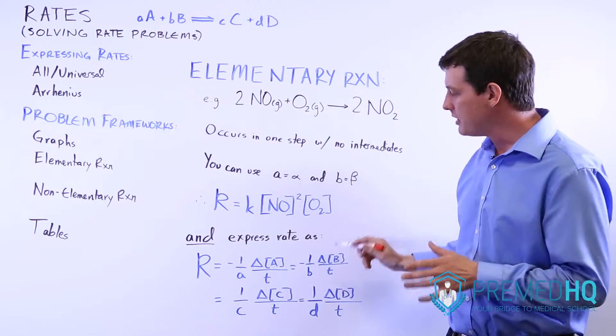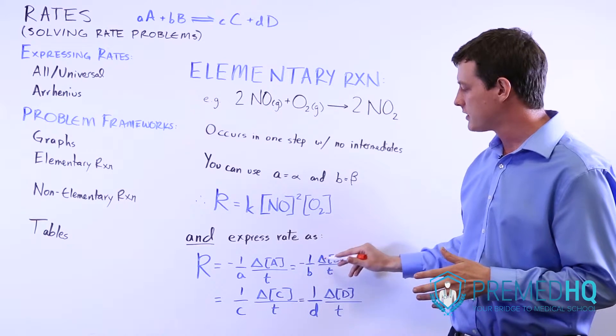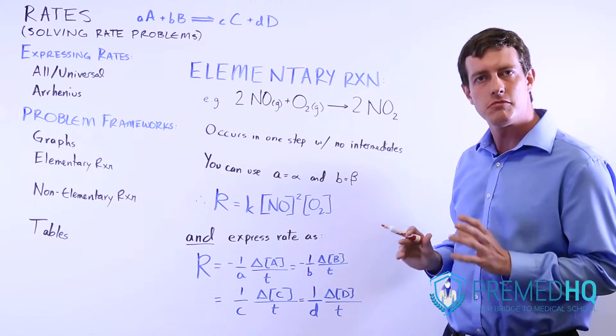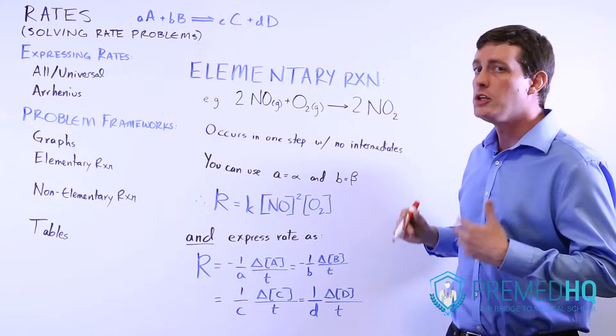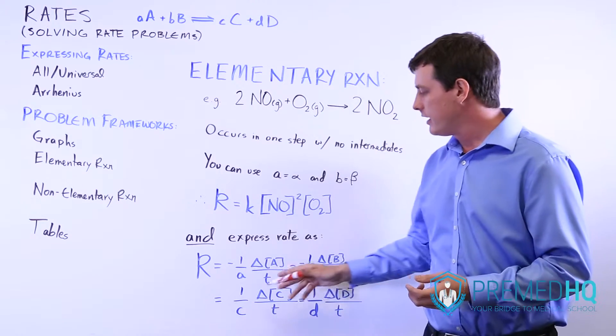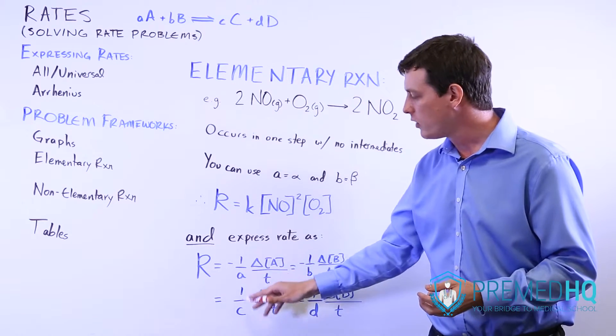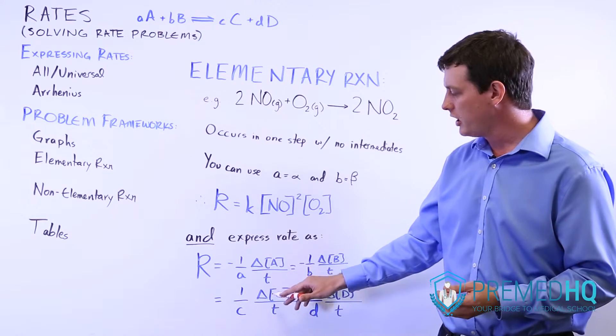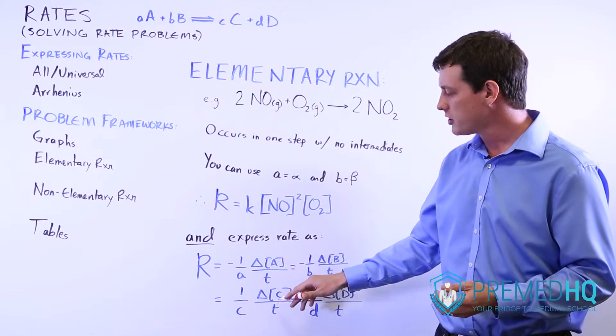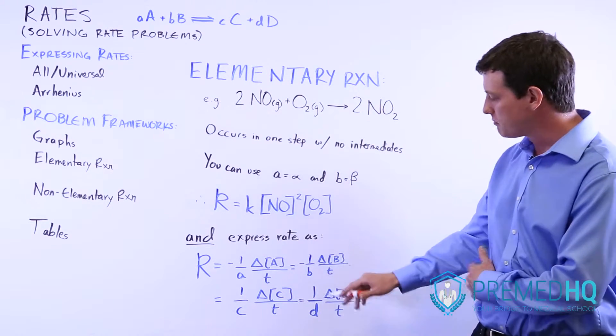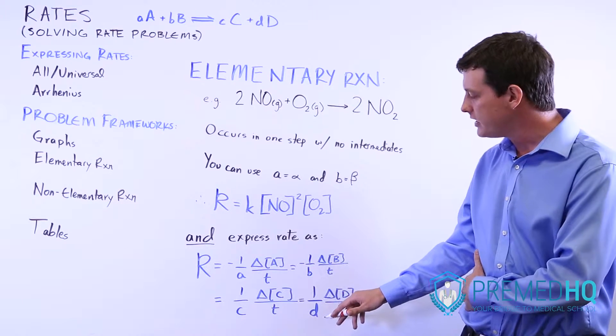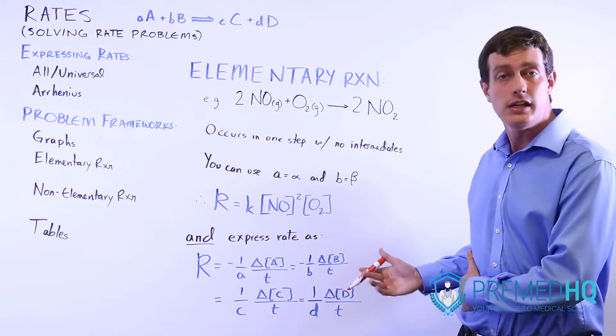That is going to be equal to negative one over B times the change in the concentration of B over time. You could also express the rate in terms of C as positive one over C times the change in C's concentration over time, or as positive one over lowercase d times the change in D over time.